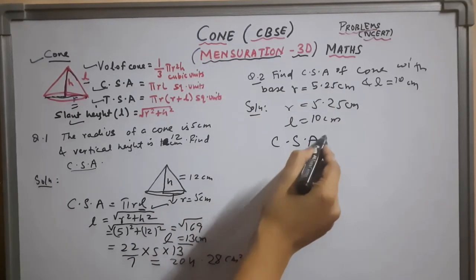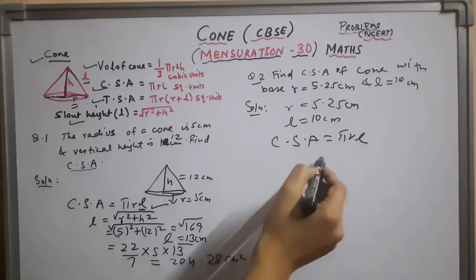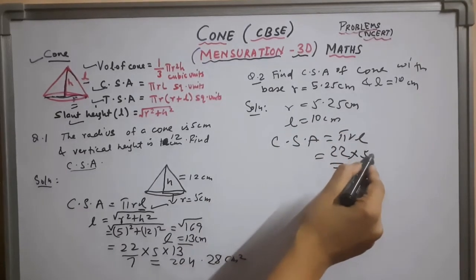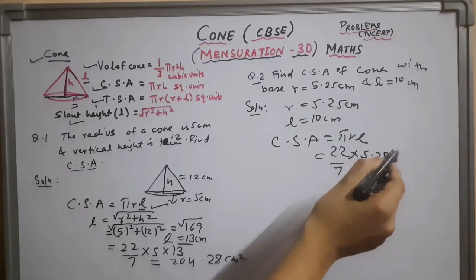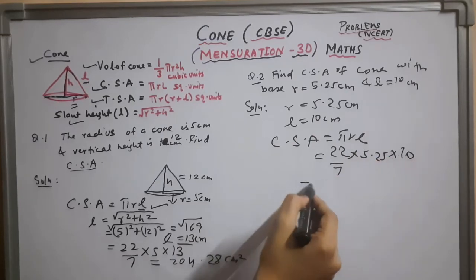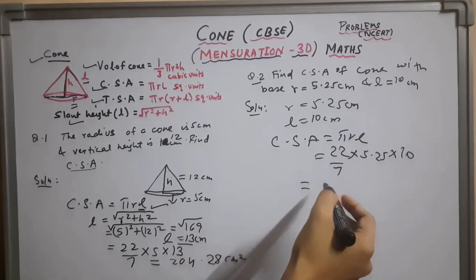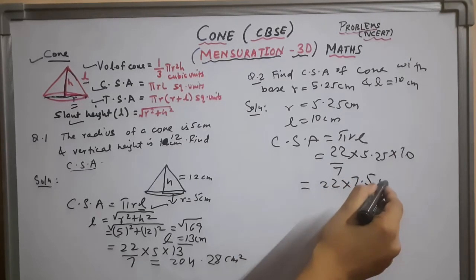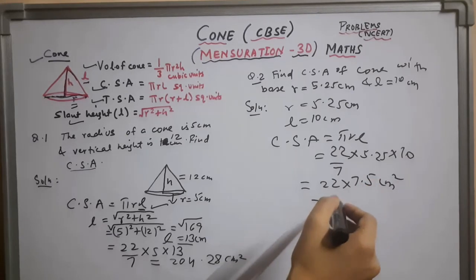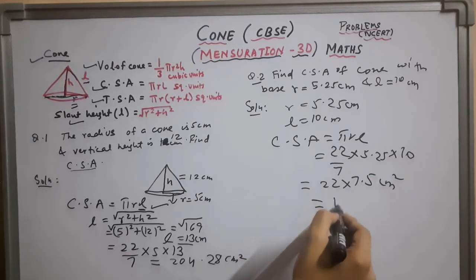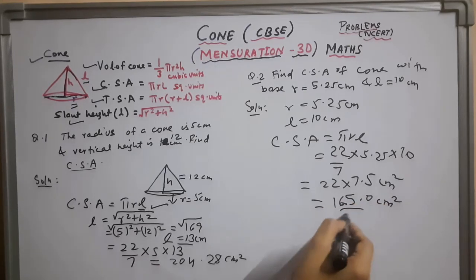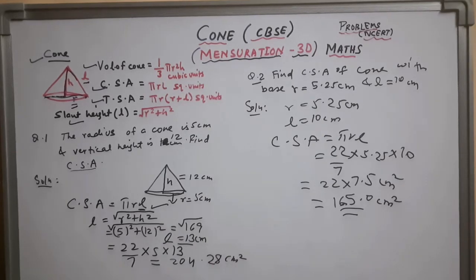Now on solving this we'll get 22 into 7.5 cm square. That will be in decimals, 165.0 cm square. This is the required answer. If you like my video please don't forget to subscribe, thank you.